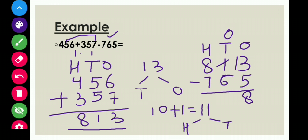Coming to the tens place: zero minus six is again not possible because six is greater than zero. So zero will borrow from eight at the hundreds place. Eight gives one ten to zero, so it becomes ten, and eight becomes seven. Ten minus six is equals to four. At the hundreds place, seven minus seven is equals to zero. So children, our final answer is zero, four, eight — which means forty-eight. So 456 plus 357 minus 765 is equals to forty-eight.